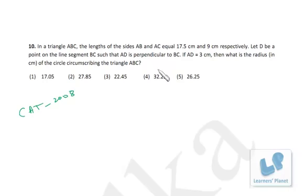Precisely, we have to find out the circumradius, right? So this is A, B, C. This is 17.5, this is 9, this we don't know, this is 3. And suppose this is actually A, this is B, and this is C.